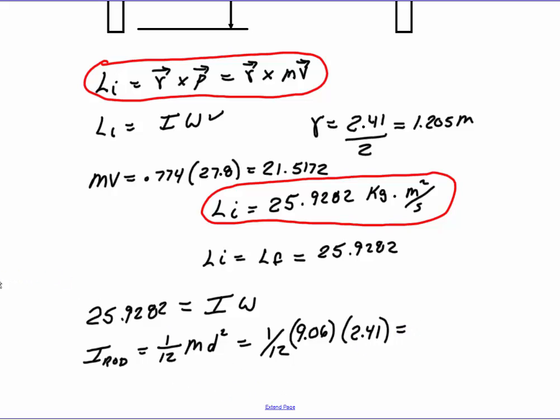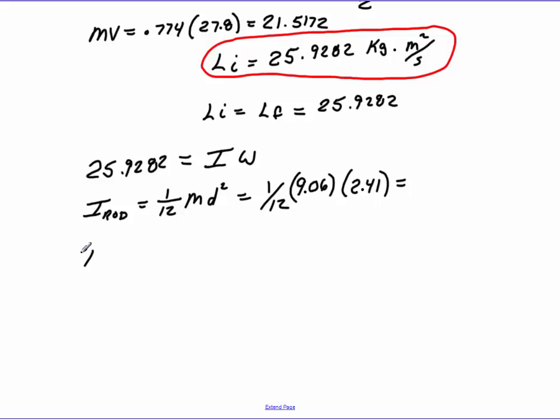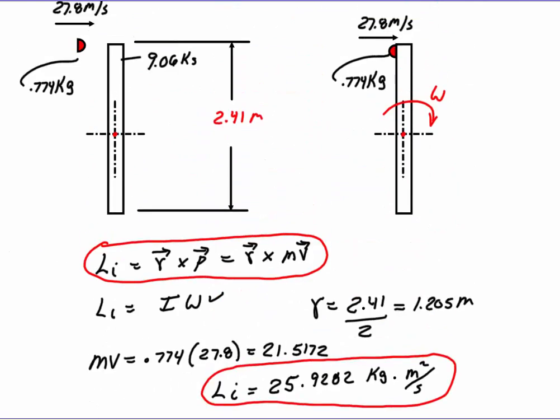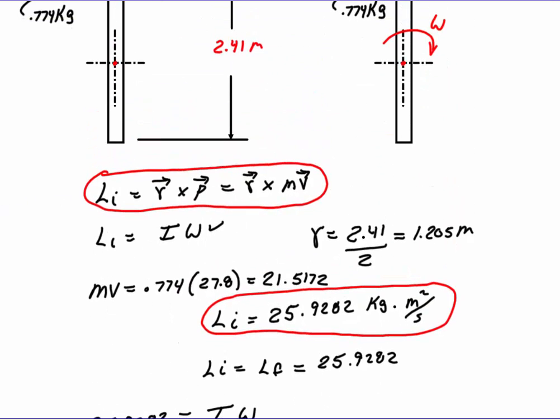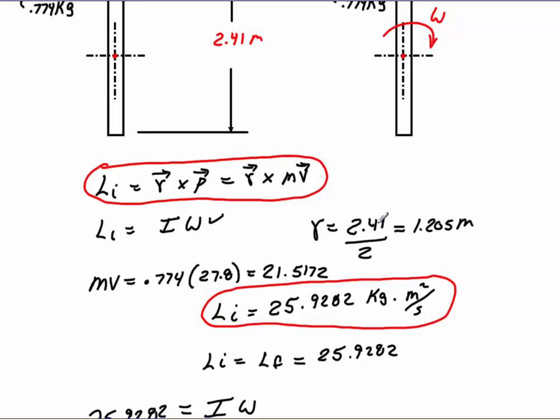That would be the total moment of inertia of just the rod. And now that object that's stuck down at the end, we need to go back and calculate the moment of inertia of it. We'll calculate the moment of that projectile. We'll treat that as just a point mass, and that's going to be using the equation m times r squared, meaning the distance from the center. So the mass of that projectile is going to be 0.774 times the distance, the R value right here, 1.205.